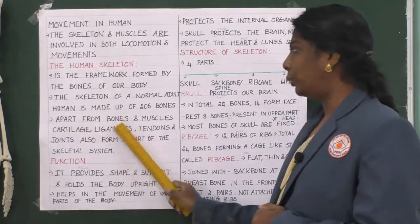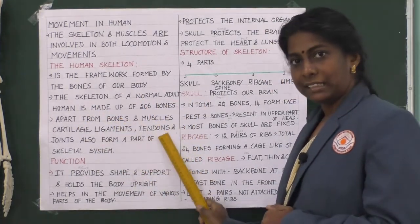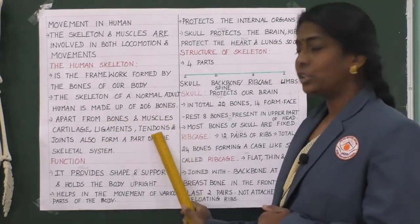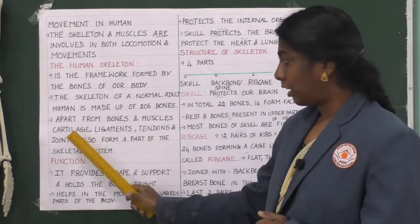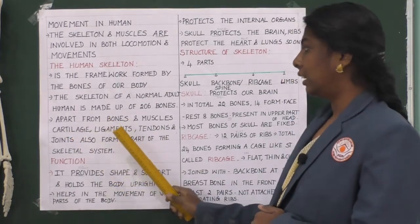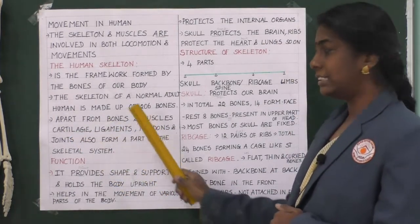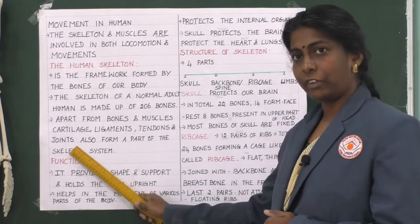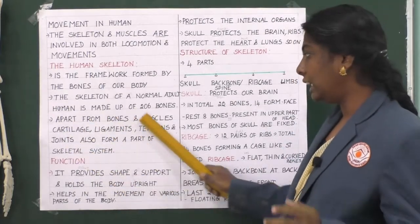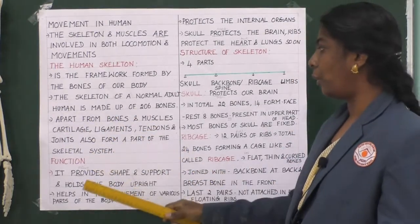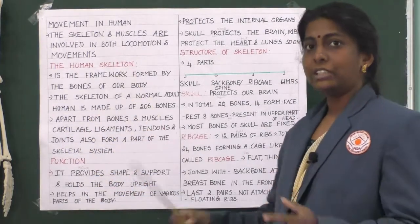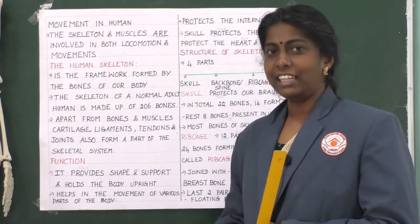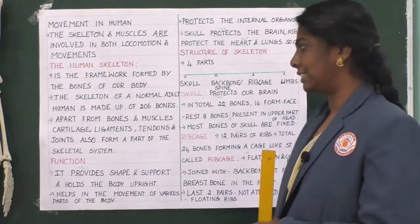Apart from bones and muscles, the skeletal system also includes cartilage, ligaments, tendons, and joints. All these things form part of the skeletal system.